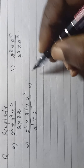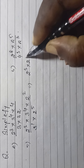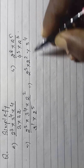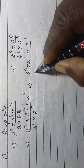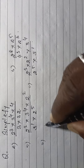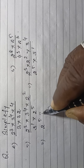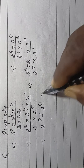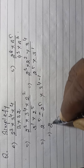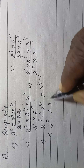Keeping equal base: 2 to the power 3, into 2 to the power 2, into 3 to the power 4, divided by 2 to the power 5, into 3 to the power 1. Then combining like bases: 2 to the power (3+2−5), into 3 to the power (4−1). That is 2 to the power 0, into 3 to the power 3.